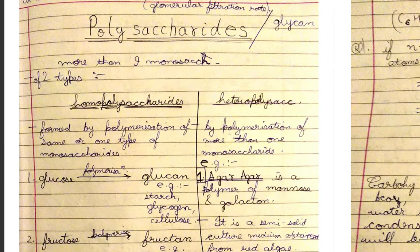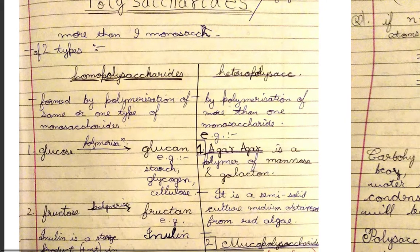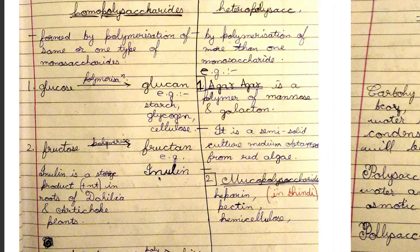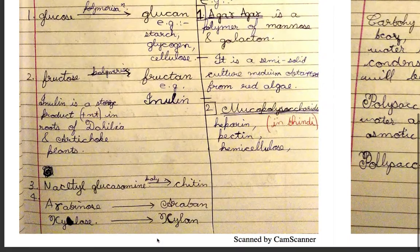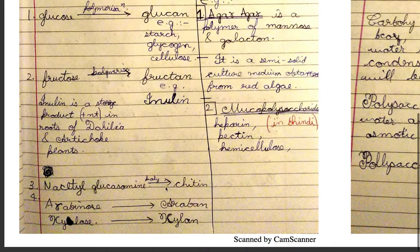Polymerization of glucose gives glucans. Examples: starch is a storage polysaccharide, glycogen is also a storage polysaccharide, and cellulose is a structural polysaccharide. Fructose polymerizes to form fructan — for example, inulin. Inulin is a storage product present in the roots of dahlia and artichoke plants. N-acetyl glucosamine gives chitin. Arabinose gives arabin, and xylose gives xylan.